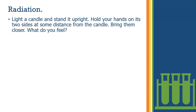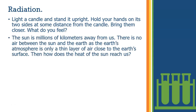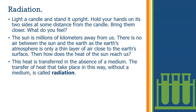Light a candle and stand it upright. Hold your hands on its two sides at some distance from the candle. Bring them closer — what do you feel? Obviously you will feel some warmth from the candle. The Sun is millions of kilometers away from us. There is no air between the Sun and the Earth, as the Earth's atmosphere is only a thin layer of air close to the Earth's surface. Then how does the heat of the Sun reach us? This heat is transferred in the absence of a medium. The transfer of heat that takes place without a medium is called radiation.